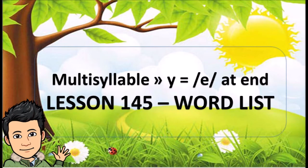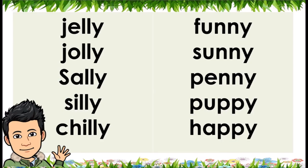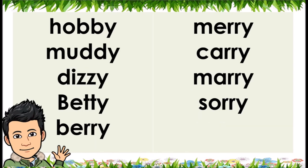Lesson 145, Word List: Multi-syllable, Y equals /E/ at end. Jelly, Jolly, Sally, Silly, Chilly, Funny, Sunny, Penny, Puppy, Happy, Hobby, Muddy, Dizzy, Betty, Mary, Carrie, Sorry.